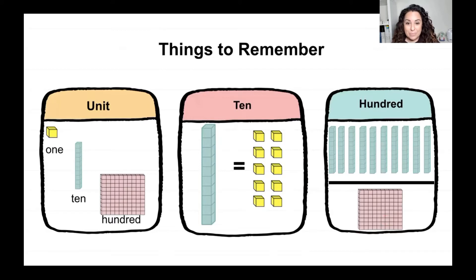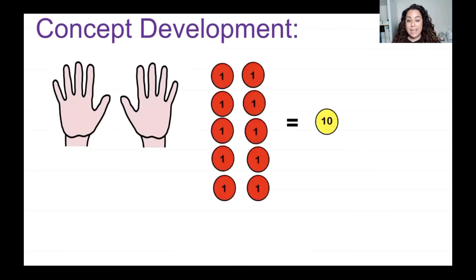I have my hands right here. How many fingers do I have? I have 10. I'm going to count my fingers: 1, 2, 3, 4, 5, 6, 7, 8, 9, 10. I have 10 fingers. So if I have 10 ones and I put them together, that makes a unit of 10. I could say 10 ones is equal to 1 ten. If I separate my fingers, I have ones, but if I put them all together, I have a group of 10.